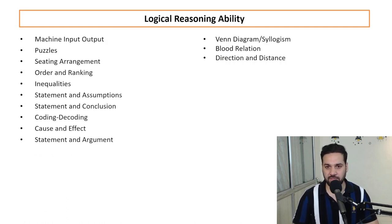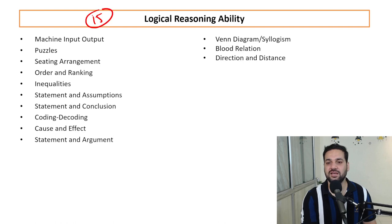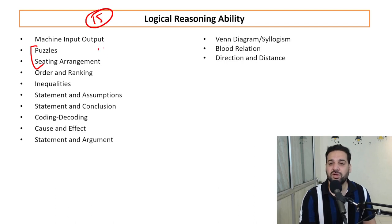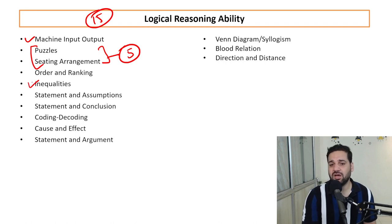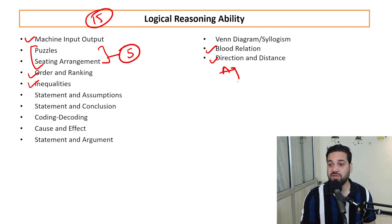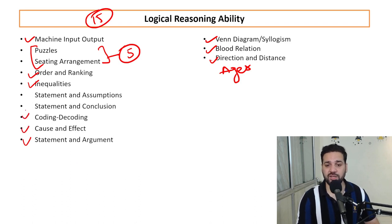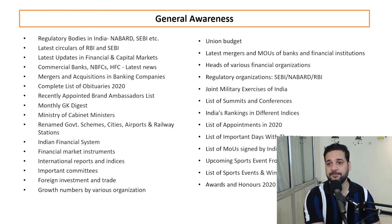In Reasoning Ability, there are 15 questions. The probability of puzzles and seating arrangement is very low, but if they do appear, one set of five questions may come. Topics that will definitely appear include: Machine Input-Output, Inequalities, Order and Ranking, Direction Sense Test, Blood Relations, Problems Based on Ages, Syllogism, Statements and Arguments, Cause and Effect, Coding-Decoding, Statements and Conclusions, and Statements and Assumptions.